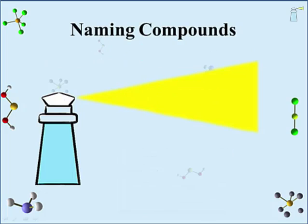Naming compounds from a formula is a necessary step in keeping order to the study of chemistry. This lecture looks at the naming structure of different types of compounds and is constructed to allow students to view the lecture by topic.